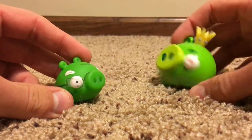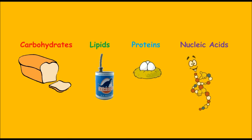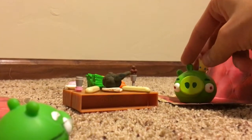Let's just do this video normally. There are four types of macromolecules: carbohydrates, lipids, proteins, and nucleic acids. Each one has its own set of functions and structure of their monomers and polymers. What are monomers and polymers? Well, 'mono' means one and 'poly' means many.